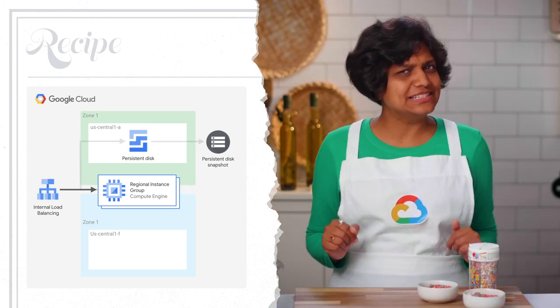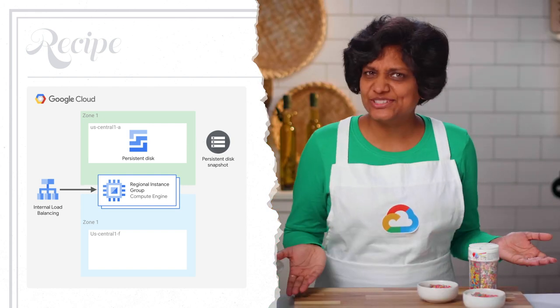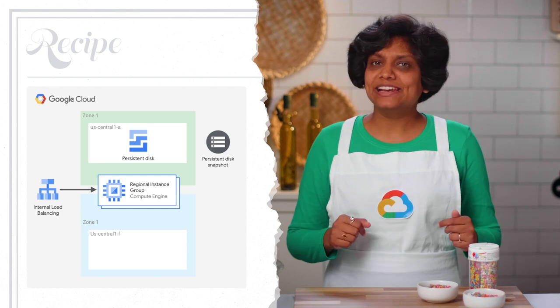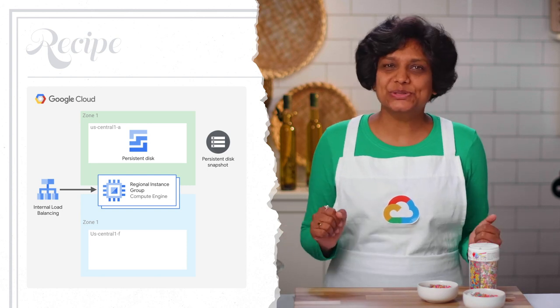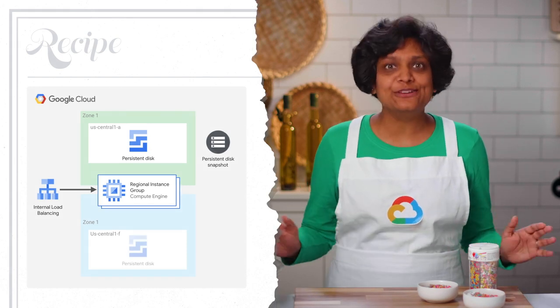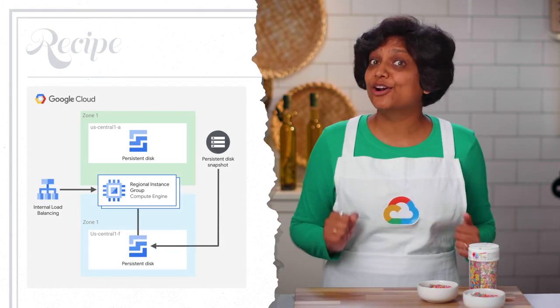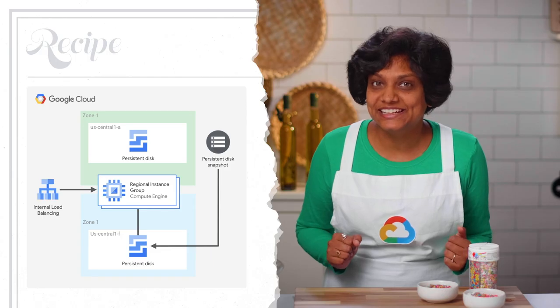Now, what happens in case of a disaster? Main Event Planning does not need to initiate any failover steps because they occur automatically. That is the best part of the default HA features available in Google Cloud.